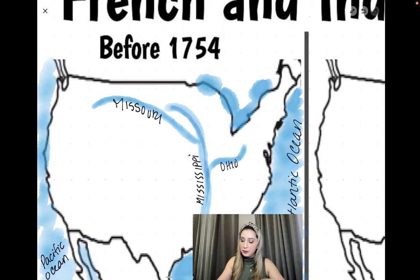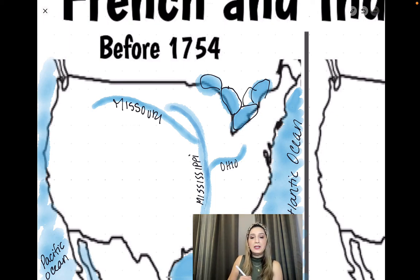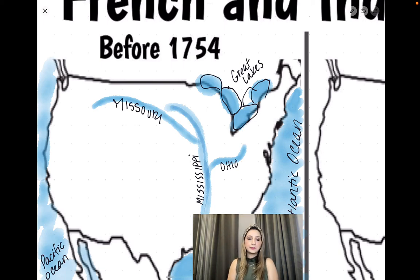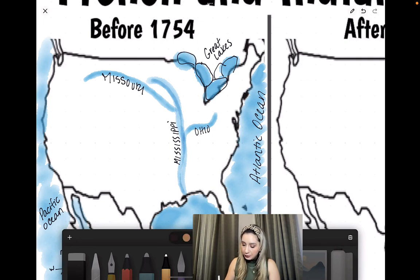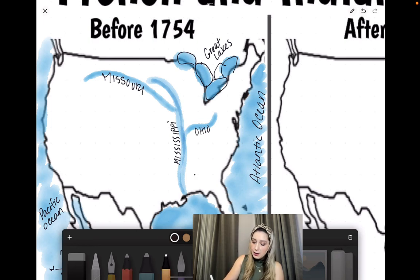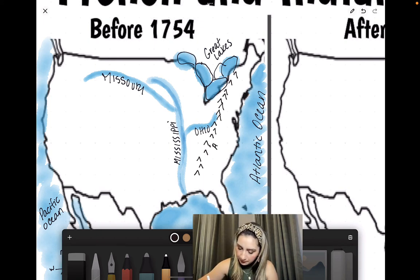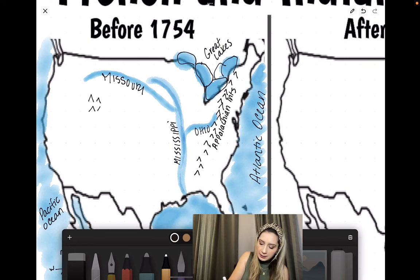Make sure that we've identified those rivers, as well as the Great Lakes — there should be five of them. Once we've done that, let's start with our mountains, which are important because mountains become boundaries and it becomes difficult for colonists to cross these. I'm going to draw the Appalachian Mountains across here and label them, and I'm also going to draw the Rocky Mountains over here.